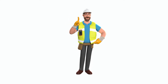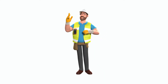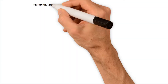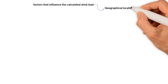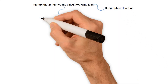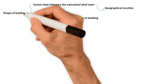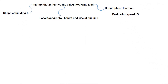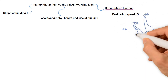How wind acts on a building is a complex matter but has been simplified so that a static wind load can be calculated for any normal structure. Many factors influence the calculated wind load, and these are geographical location, local topography, height, and size of the building, and shape of the building. The basic data is the basic wind speed, V, which depends on the geographical location and is obtained from a wind map.